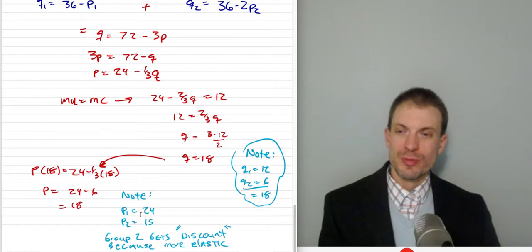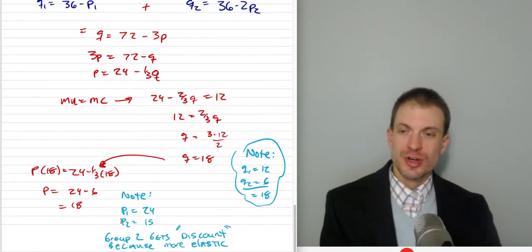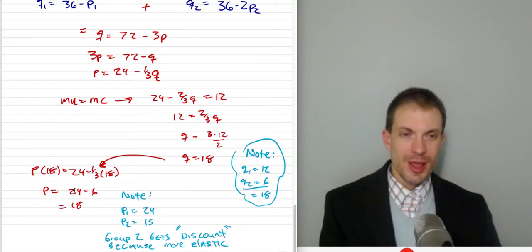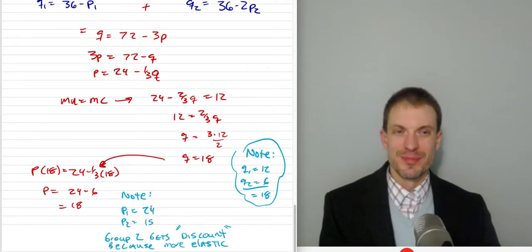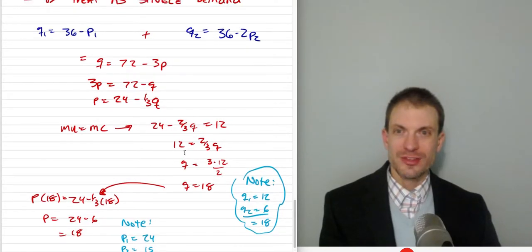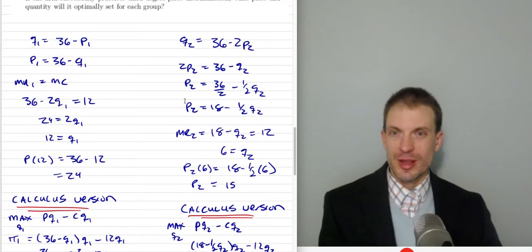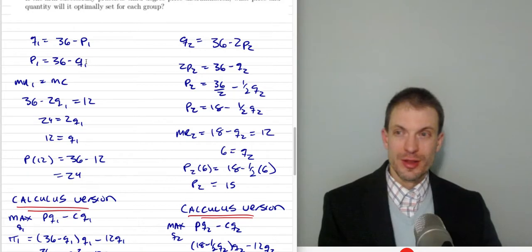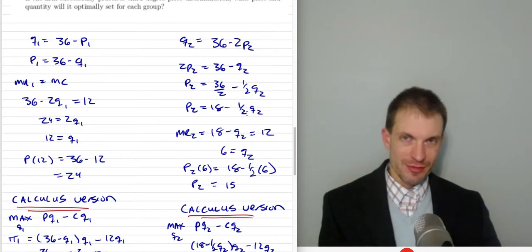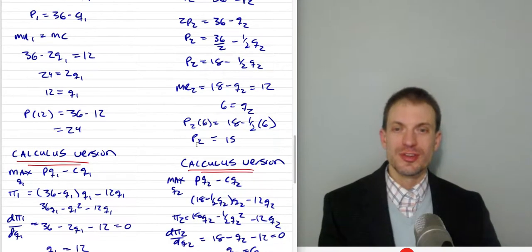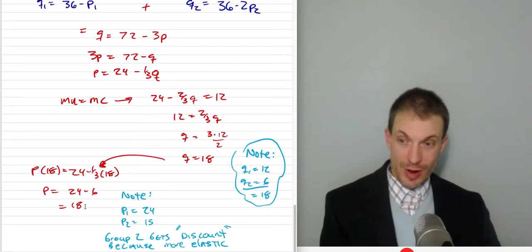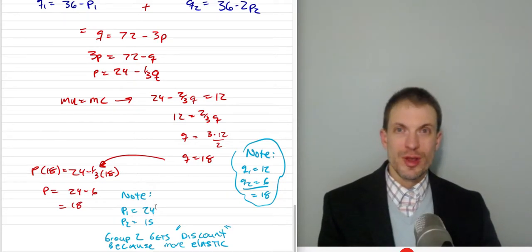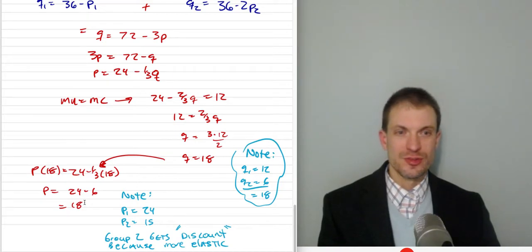What about the price? Without discrimination the firm charges 18. With discrimination, market one pays 24 — a price premium — and market two pays 15 — a discount. Market two gets a discount because its demand is more elastic. Comparing inverse demands: market one has a steeper slope (minus 1) while market two has a flatter slope (minus one-half), meaning market two is more elastic. More elastic demand gets a discount; more inelastic demand pays a premium. This is generally true with third-degree price discrimination.